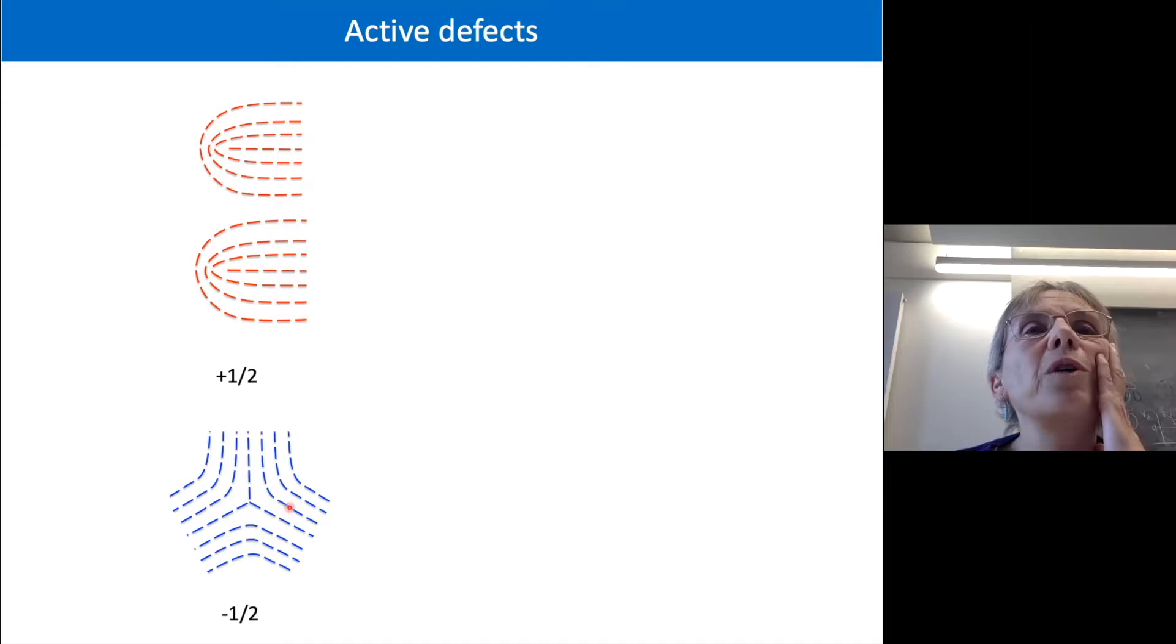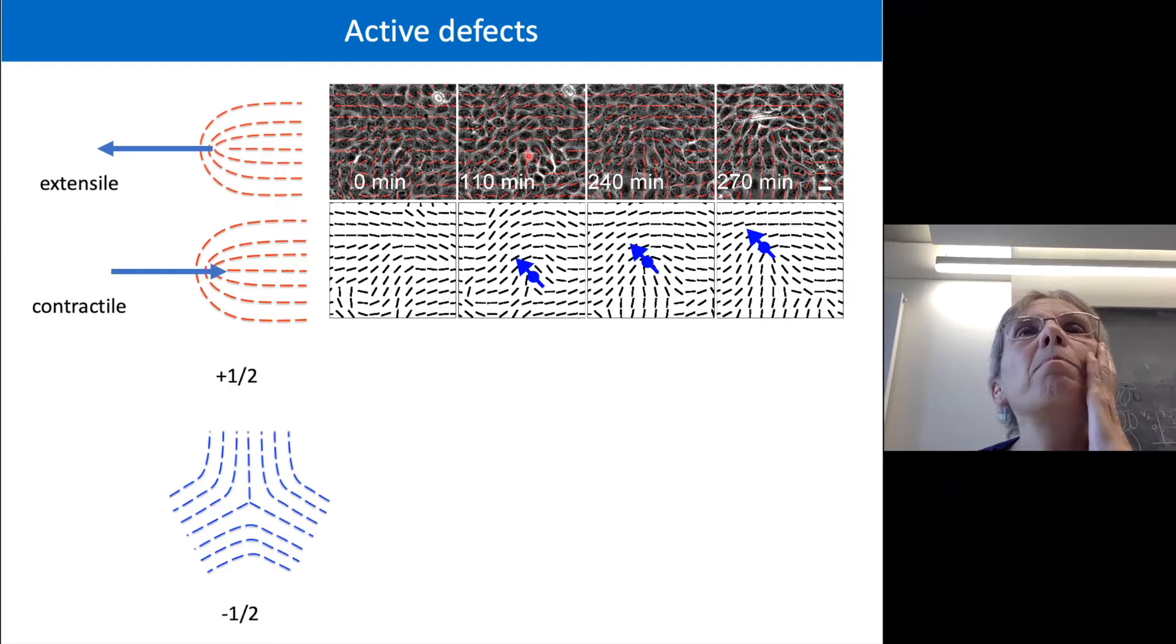And you can see those in these bacteria. And you can also see them in cells. And this is some work we did quite a long time ago now, trying to map cells onto one of these active nematic theories.